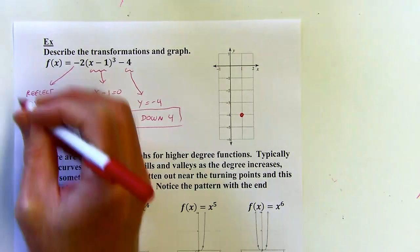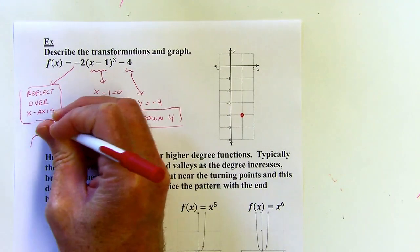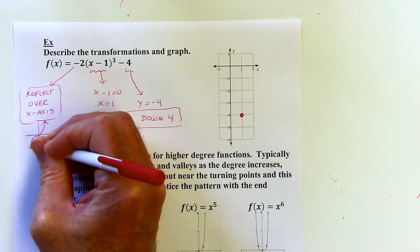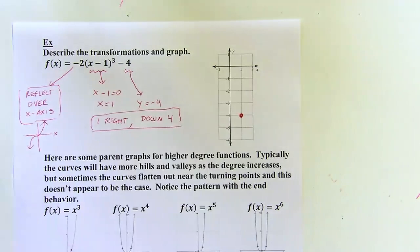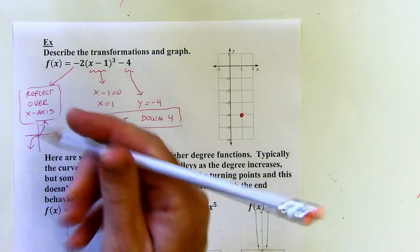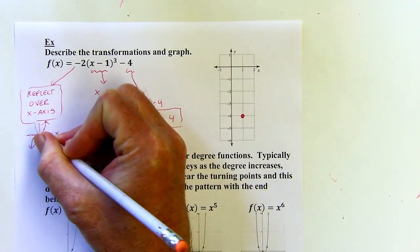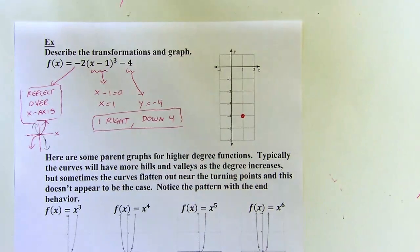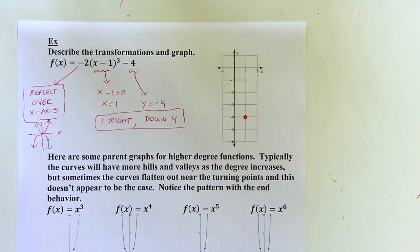So let's think about what that would mean. If my parent graph looks something like this and we're reflecting over the x-axis — here's the x-axis and the y-axis — any point up here would get moved down there, and what's going to happen, it's going to look like that. So my curve is not going to go uphill from left to right; it's going to go downhill from left to right.